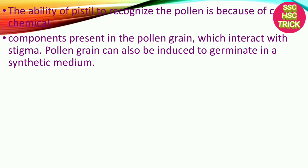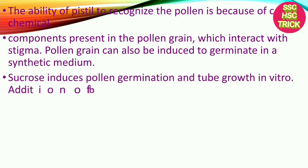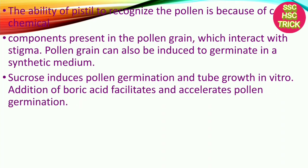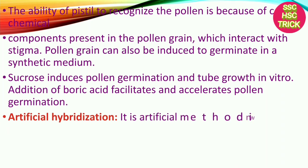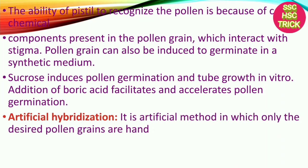Pollen grains can also be induced to germinate in a synthetic medium. Sucrose induces pollen germination and tube growth in vitro. Addition of boric acid facilitates and accelerates pollen germination.